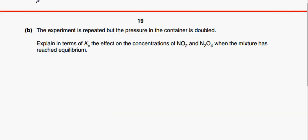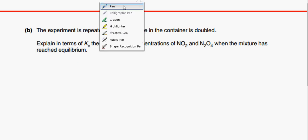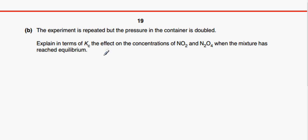So the next question asks us that it tells us that the experiment is repeated but the pressure is doubled. And it explains in terms of Kc the effect on the concentrations of these two when the mixture has reached equilibrium. The first thing that you need to write is that Kc does not change. Kc only changes with temperature.